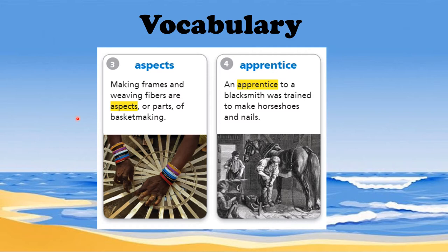Number three, we have aspects. Making frames and weaving fibers are aspects, or parts, of basket making. The clue in the sentence is the word parts, which means the same as aspects. Another meaning for aspects would be different views that show the parts of a whole — like fractions in mathematics, where different aspects come together to form a whole.